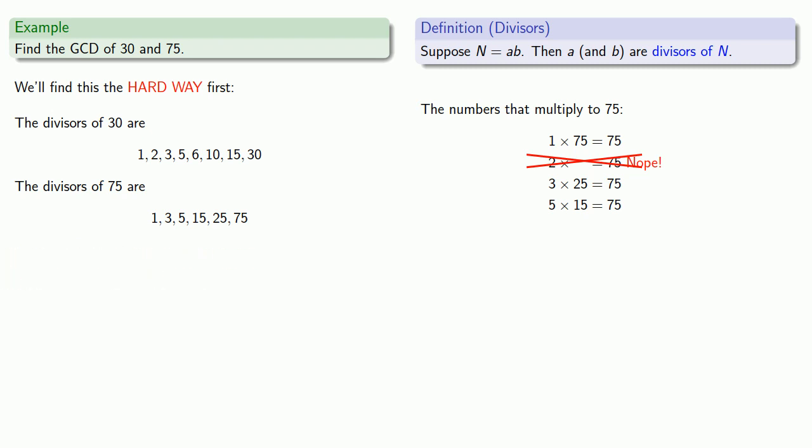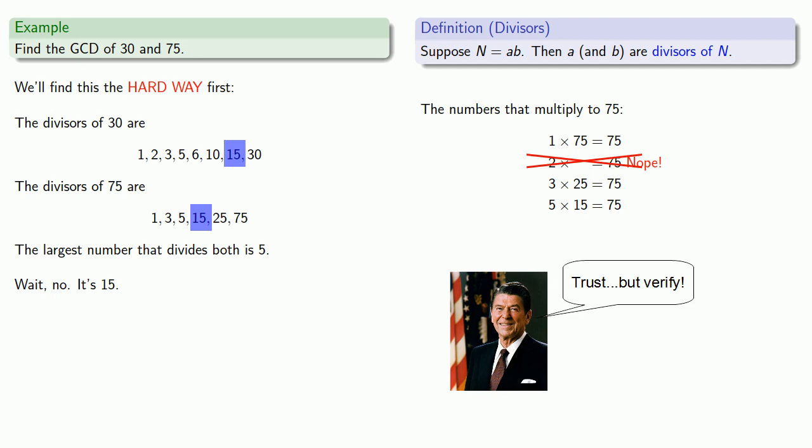And after all this work, we've probably forgotten what our original problem is, so it's a good thing it's up here. We want to find the greatest common divisor, and we stare at these lists of numbers. And we see that the largest number that divides both is 5, wait, no, it's actually 15.